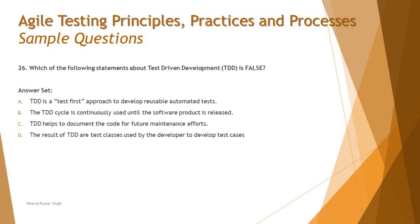Option B says: the TDD cycle is continuously used until the software product is released. That is also true — the process of TDD is generally repeated for each small piece of code, running previous tests as well as added tests consistently to ensure everything is well established as new code is added through to release.